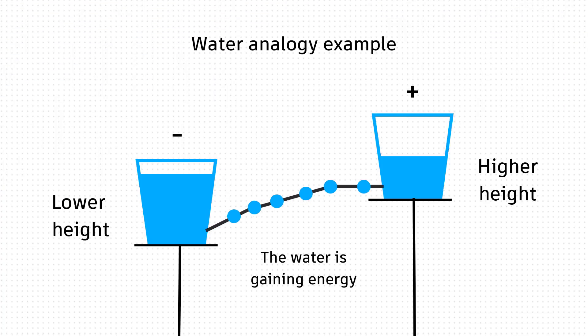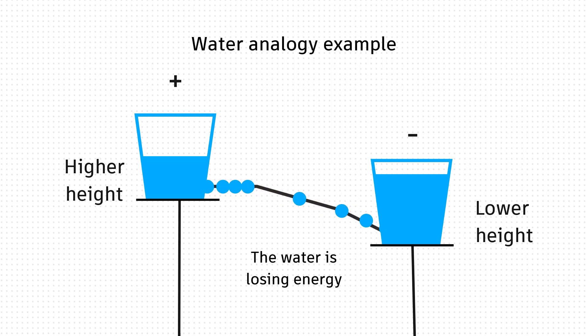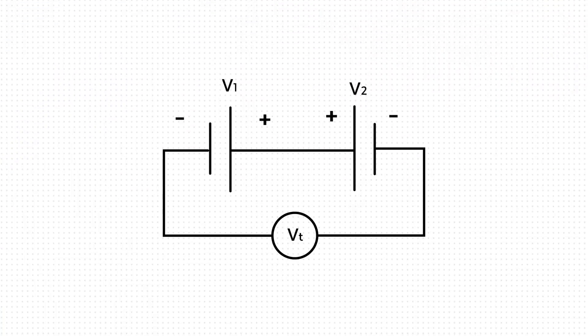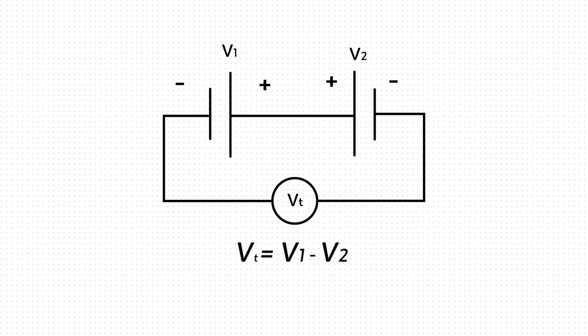We need to remember that we may have voltage drops and voltage rises in a circuit. Usually a voltage source is a representation of a voltage rise. When the current is flowing from a lower potential to a higher potential, that's going to be a voltage rise. But if we have current flowing from a higher potential to a lower potential, that's going to be a voltage drop. If you have two voltage sources connected in series, you will need to subtract the second one from the first one because the voltages are in a different sense.